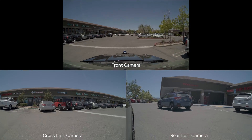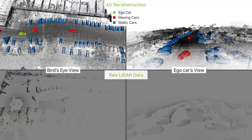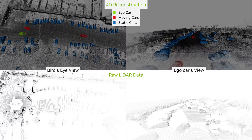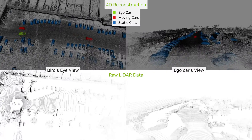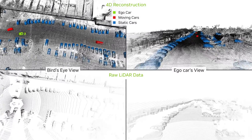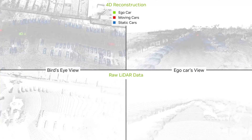Raw layout data from a single drive is shown on the top, with the corresponding 4D map reconstruction on the bottom, enabling large-scale ground truth generation.